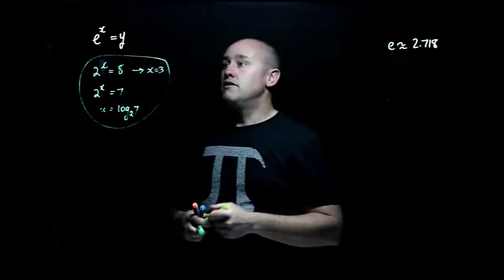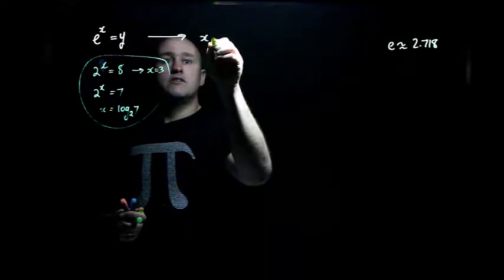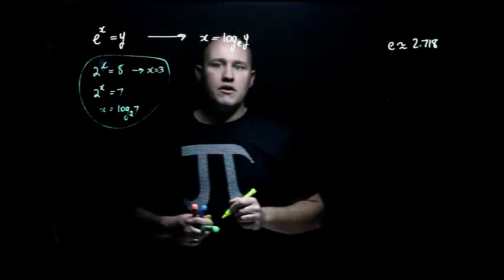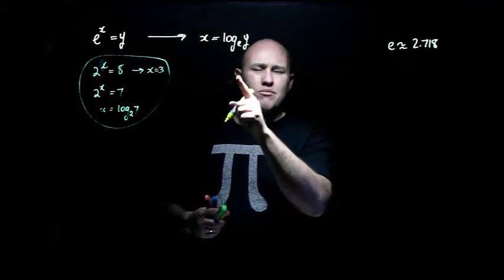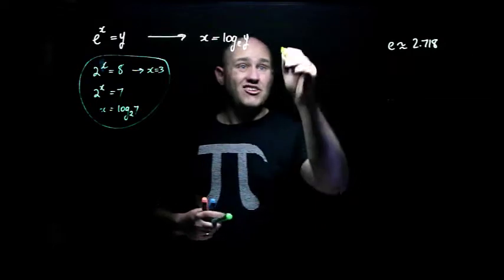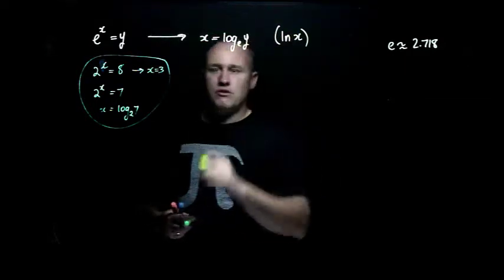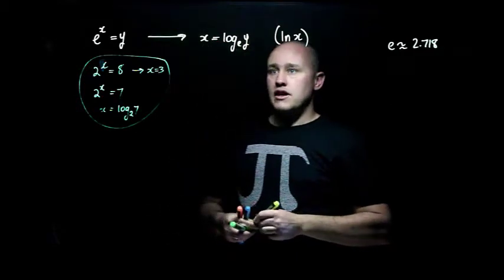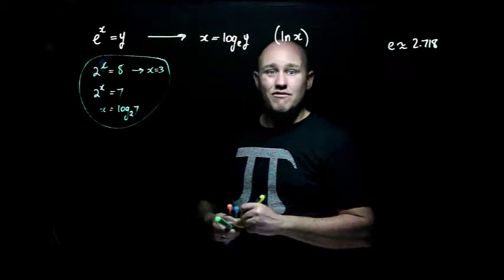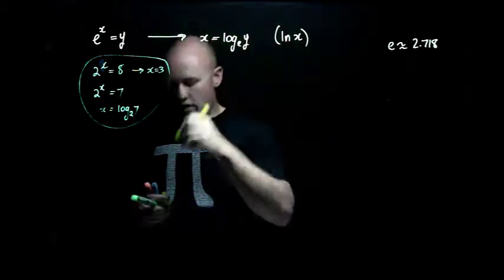But what it means is that if e to the power of x equals y, well, then x equals log base e of y. Now, I'll stick with log base e today, but, of course, log base e can be written ln, and you'll see ln on your calculator. So it's ln x. But I'll stick with that notation. So x equals log base e of y is our log, and it means we can evaluate different logs. So just as a reminder about evaluating logs,